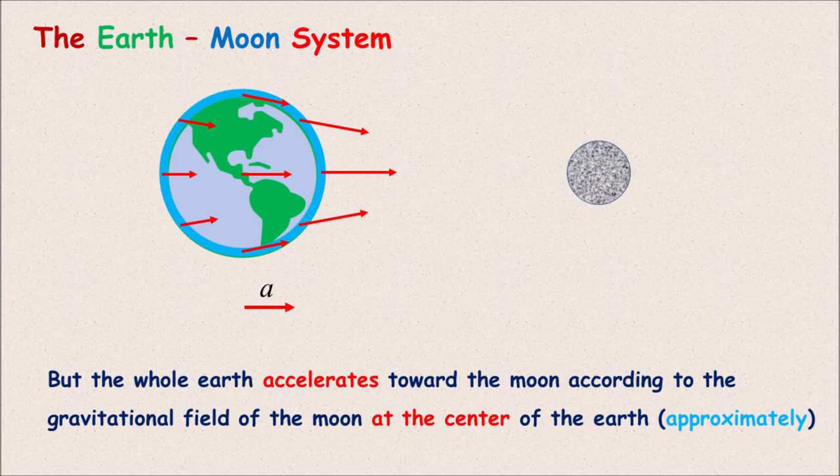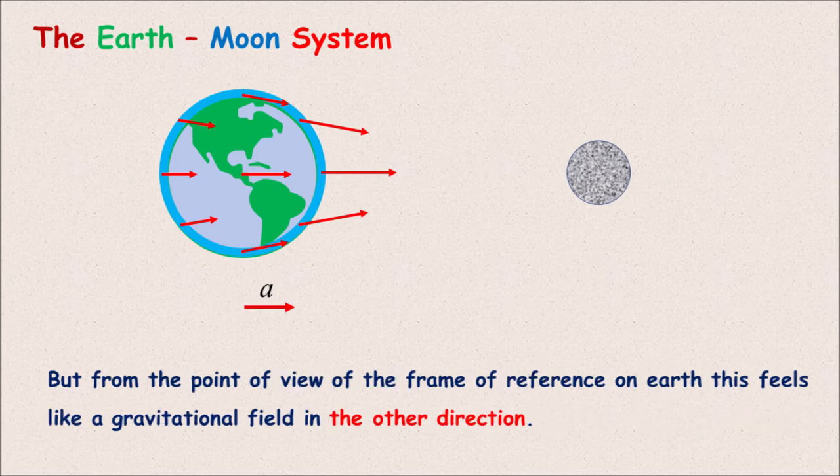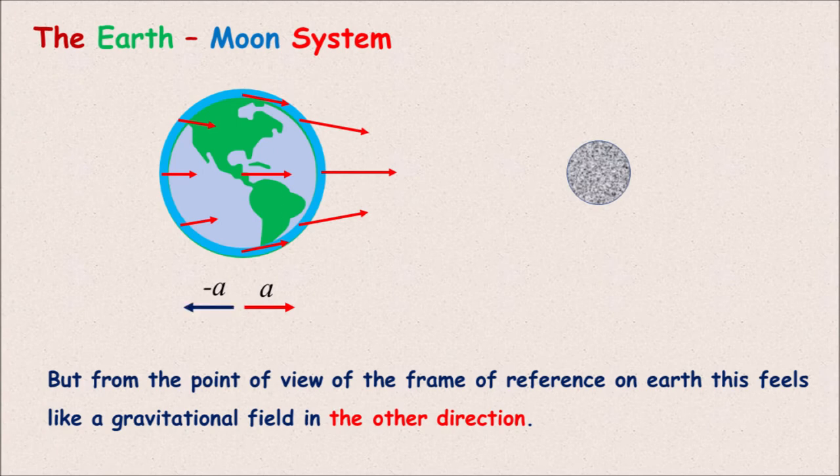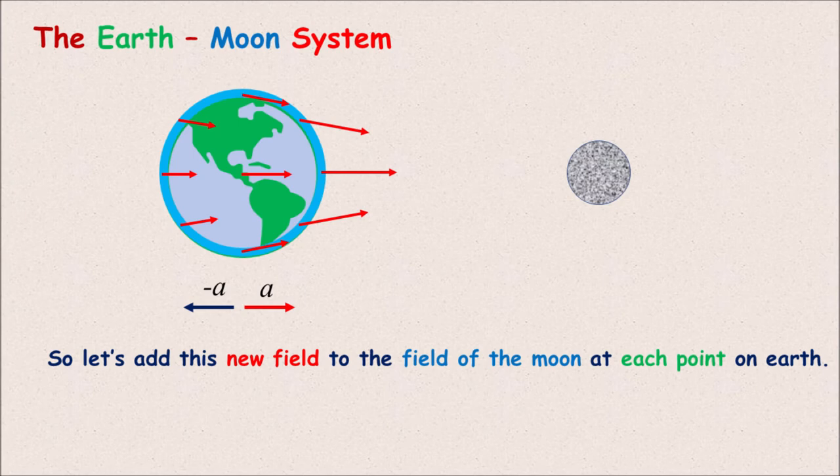But the whole earth accelerates toward the moon according to the gravitational field of the moon at the center of the earth. But from the point of view of the accelerating frame of reference on earth, this feels like a gravitational field in the other direction. So let's add this new field to the field of the moon at each point on the earth.